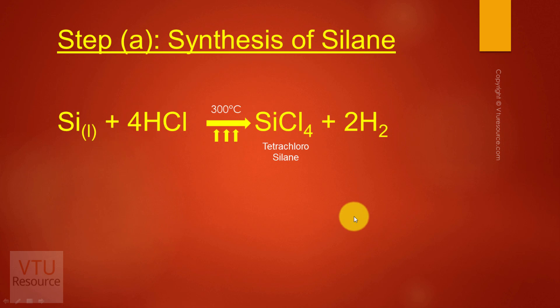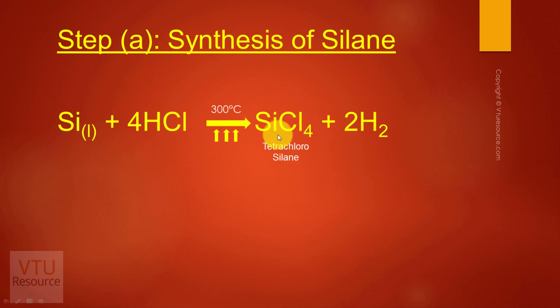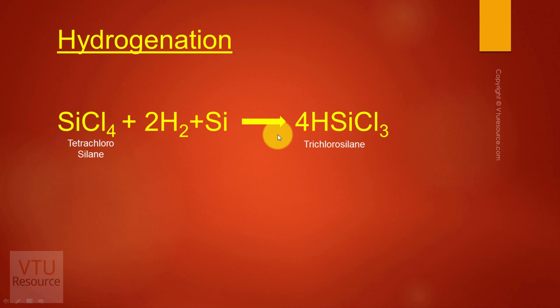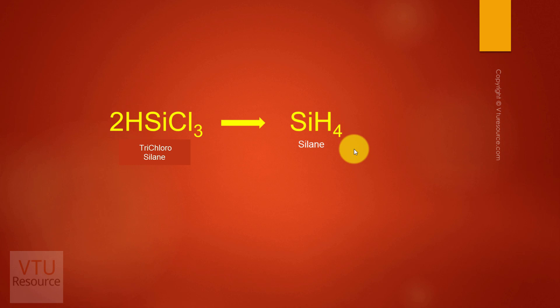First, let us see how to synthesize silane from metallurgical grade silicon. The metallurgical grade silicon is treated with HCl at 300 degrees Celsius to obtain tetrachlorosilane. Tetrachlorosilane then undergoes hydrogenation, where one chlorine atom is replaced with hydrogen, to obtain trichlorosilane. The trichlorosilane is then passed into quaternary ion exchange resin columns, where it is converted into silane.